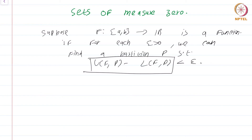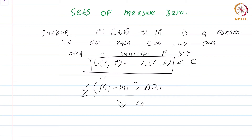In other words, if you rewrite this as the sum of (M_i minus m_i) times delta x_i, we want this quantity to be small. If this quantity is always large, then it does not seem like it would be possible to make this entire summation small. So, the reasonable intuition behind what an integrable function is, is that the variation in the function on sub-intervals is not too large.